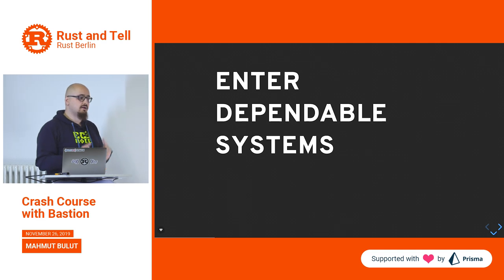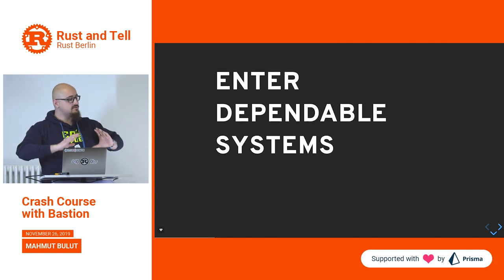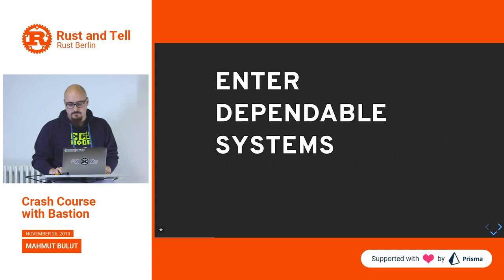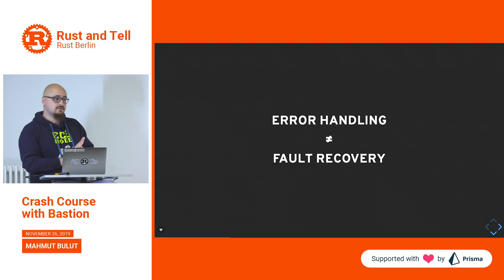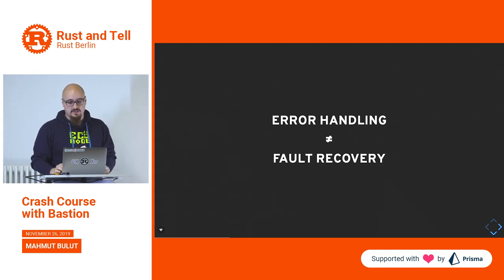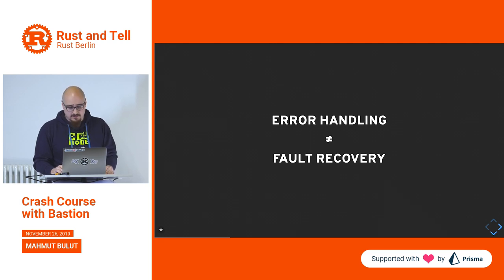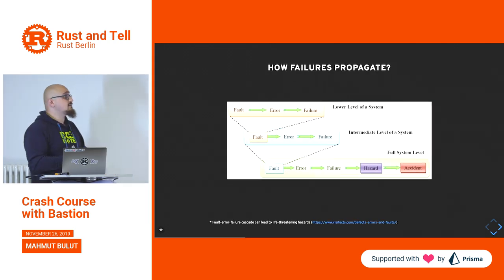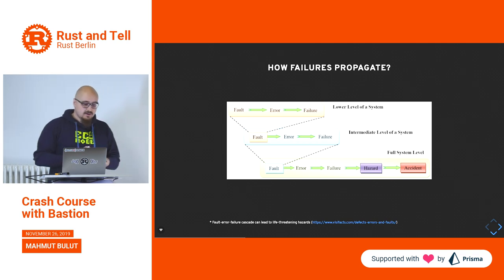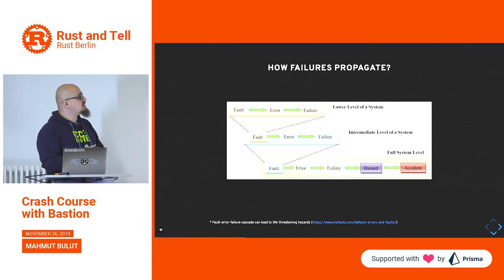We need to know how errors, faults, and failures propagate in dependable systems — originally from embedded systems — to reflect this to normal services we write for customers. The first key point: error handling is not fault recovery. This is completely wrong to conflate them, and it's the first thing taught in dependable systems classes and books. We need to know what failure is, what fault is, and what error is.